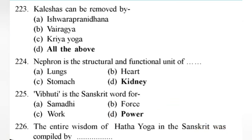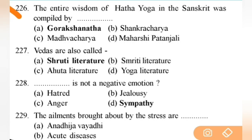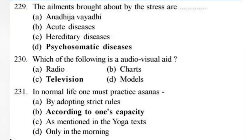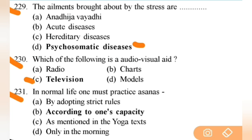The entire wisdom of Hatha Yoga in Sanskrit was compiled by — right answer is A — Gorakhnath. Next: Vedas are also called Shruti literature or Shruti Granths. Next: which of the following is not a negative emotion? Right answer is D — sympathy. Next: the elements brought about by stress are — right answer is D — psychosomatic disease. Next: which of the following is an audio-visual aid? Right answer is C — television.